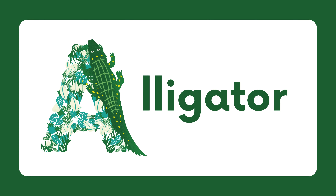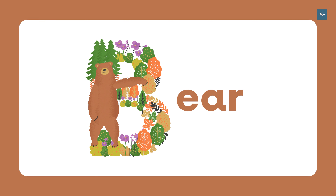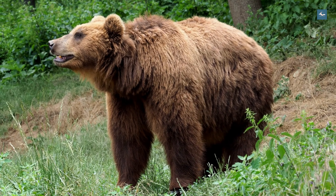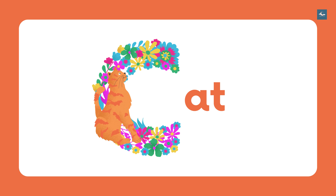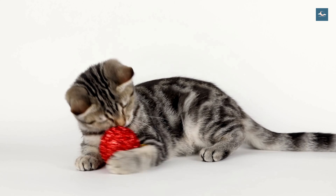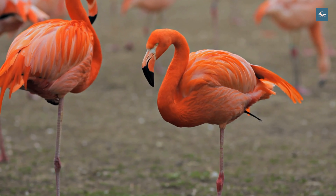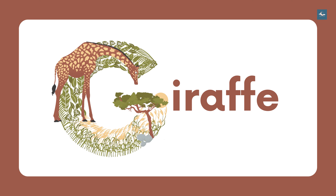ABC for animals. A for alligator, B for bear, C for cat, D for dog, E for elephant, F for flamingo, G for giraffe.